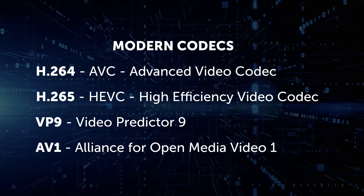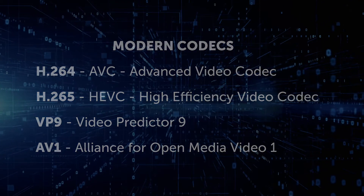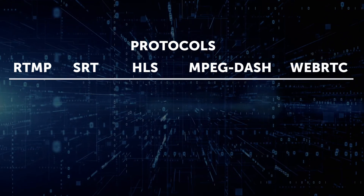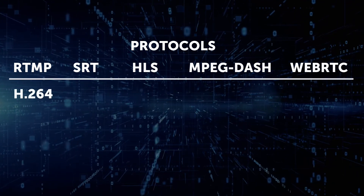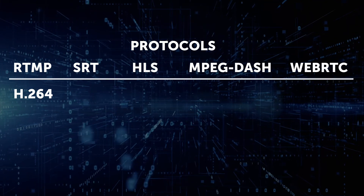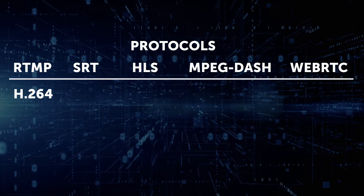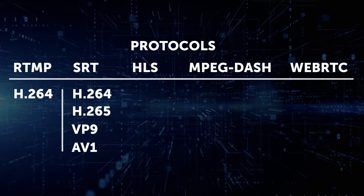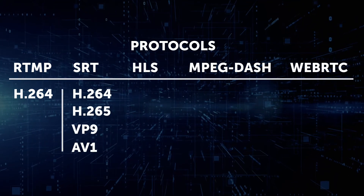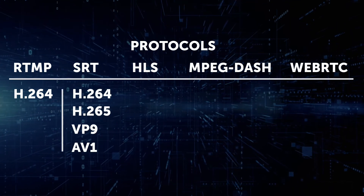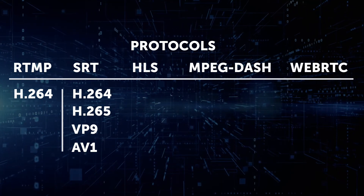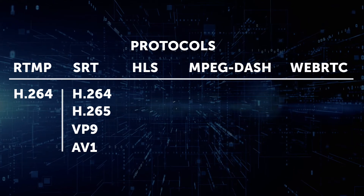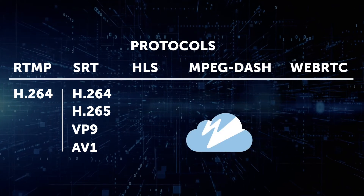When picking the right codec you still need to consider the protocol. Encoder software is mainly designed to stream RTMP, but from the prior list RTMP can only handle H.264. That's why more encoding software now supports SRT, which can handle noisy networks better and is codec agnostic so any codec can be used. Both RTMP and SRT are generally not used for playback, so that's where a streaming platform like Wowza Streaming Cloud comes in.